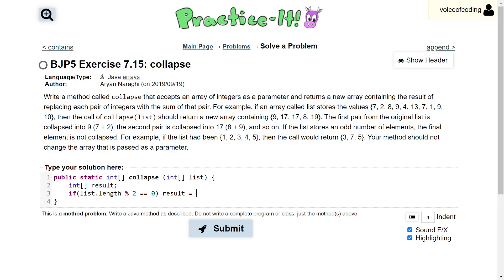If the length is divided by 2 and we have a remainder of 0, we know that it is even. In which case, we can initialize result to the length of the list divided by 2, so half of that.